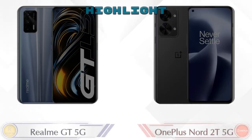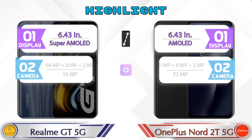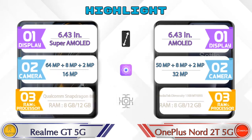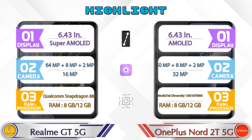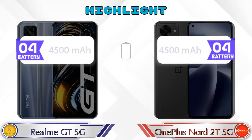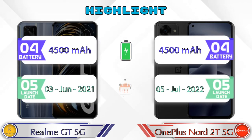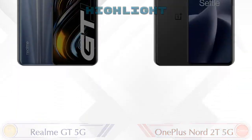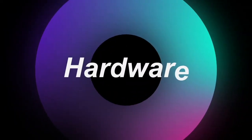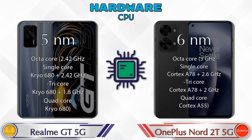Now let's talk about the highlights of both phones, then we'll do a deep comparison. First, we talk about the most important part of a phone — hardware — and the details about the CPU.